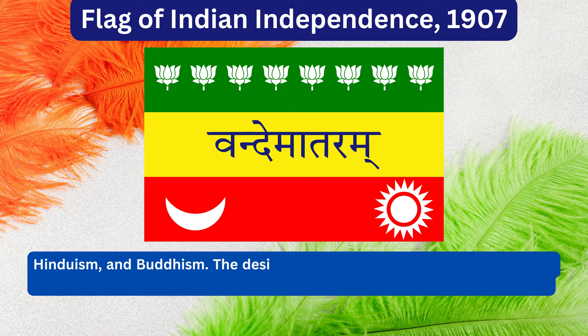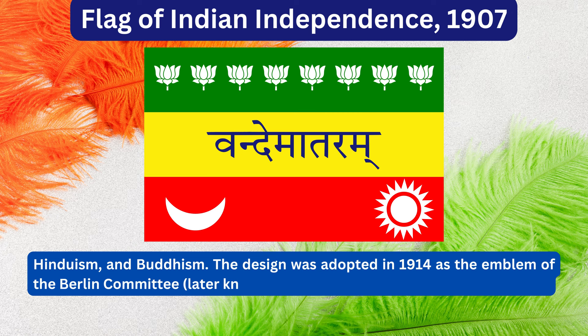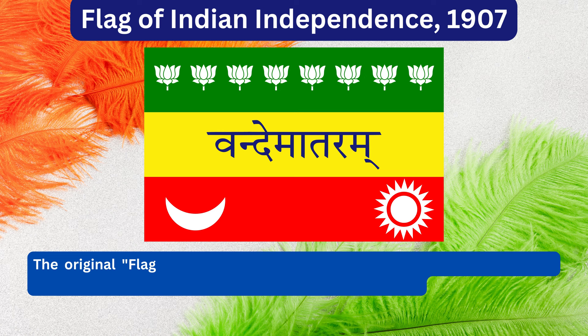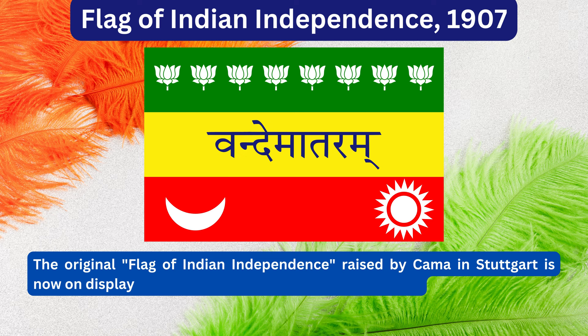The design was adopted in 1914 as the emblem of the Berlin Committee, later known as the Indian Independence Committee. The original flag of Indian independence raised by Kama in Stuttgart is now on display at the Maratha and Kesari Library in Pune.